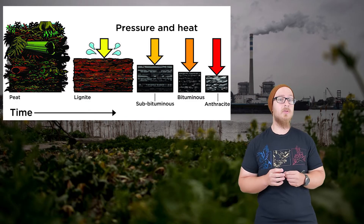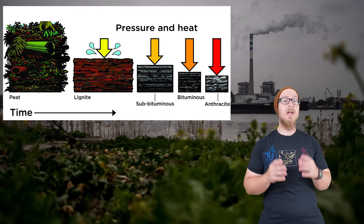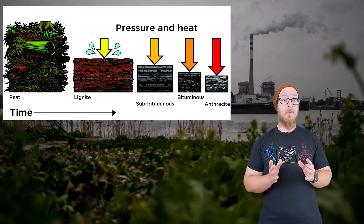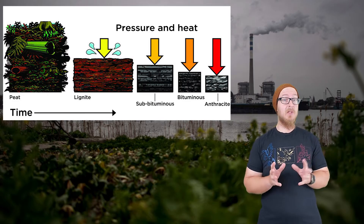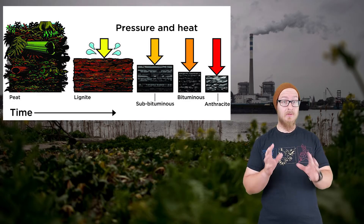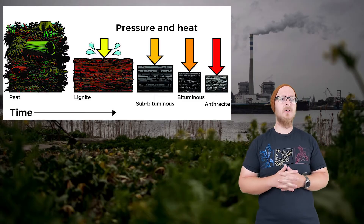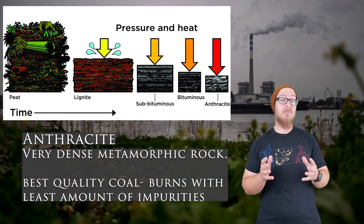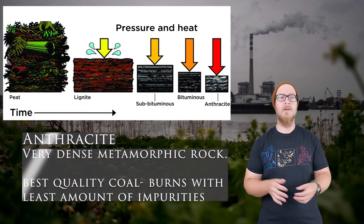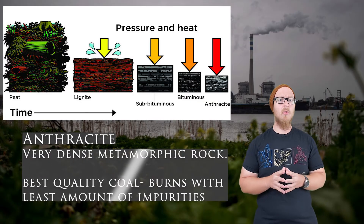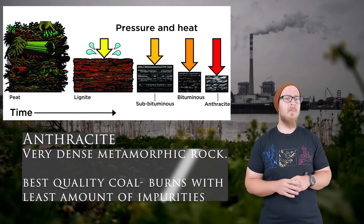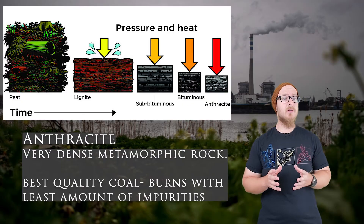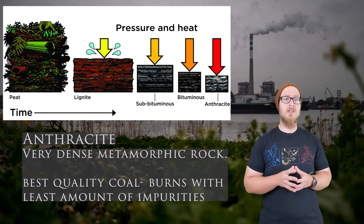Lignite, put under immense heat and pressure for incredibly long periods of time — like 350 million years — is converted into anthracite, which is categorized as metamorphic rock. It is the coal with the highest carbon content, the highest energy density, and burns with the fewest impurities.